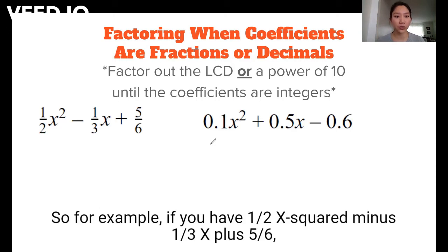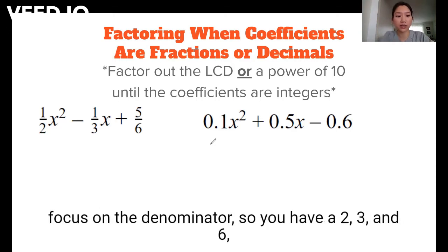So for example, if you have 1/2 x² - 1/3 x + 5/6, focus on the denominator. So you have a 2, 3, and 6.